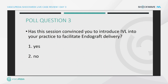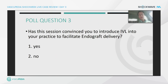There is one last poll question for participants: has this session convinced you to introduce IVL into your practice to facilitate endograft delivery? One of the major points also mentioned by Giacomo is that beyond endograft delivery, especially when using fenestrated or branched devices or even general EVAR, you sometimes need to rotate your device during delivery to get your branches and fenestrations aligned with target vessels. A tight stenosis with a lot of calcium will prohibit that — and this is also one of the major points where IVL can really help us.